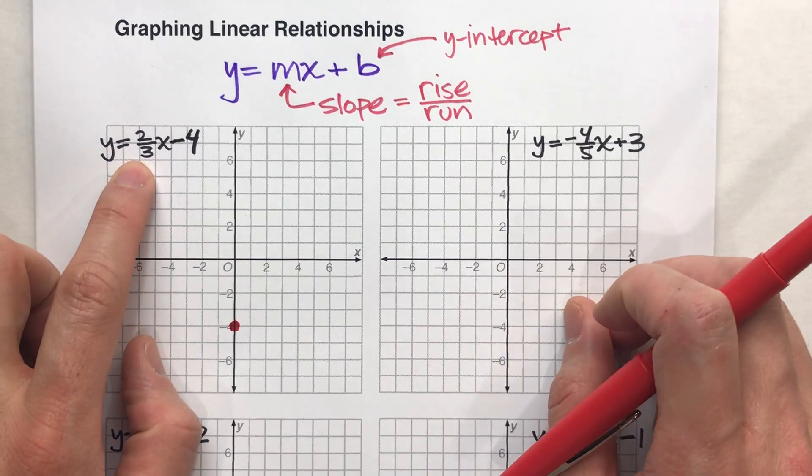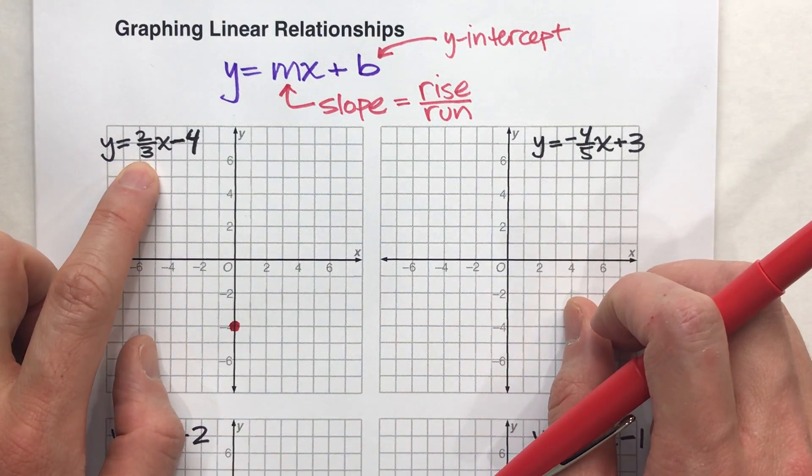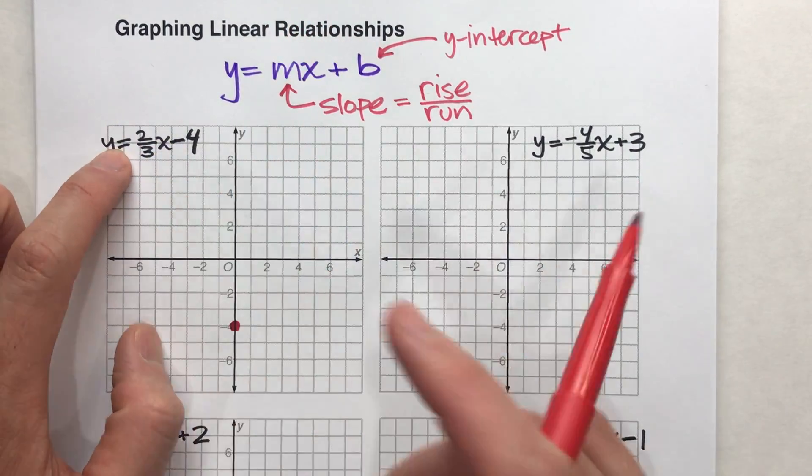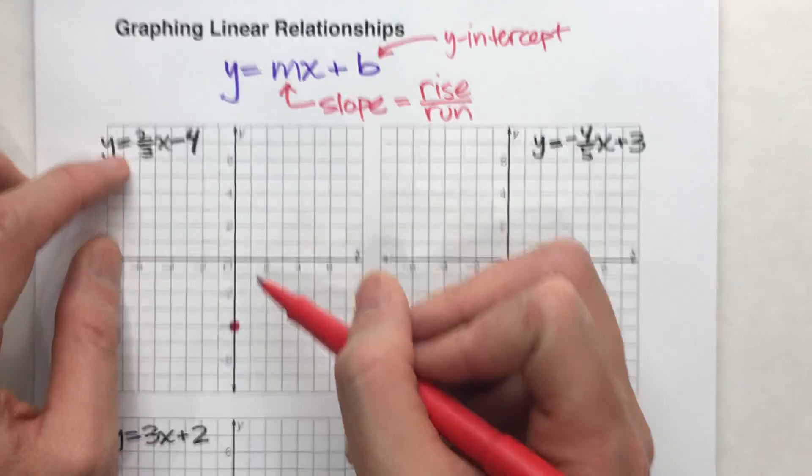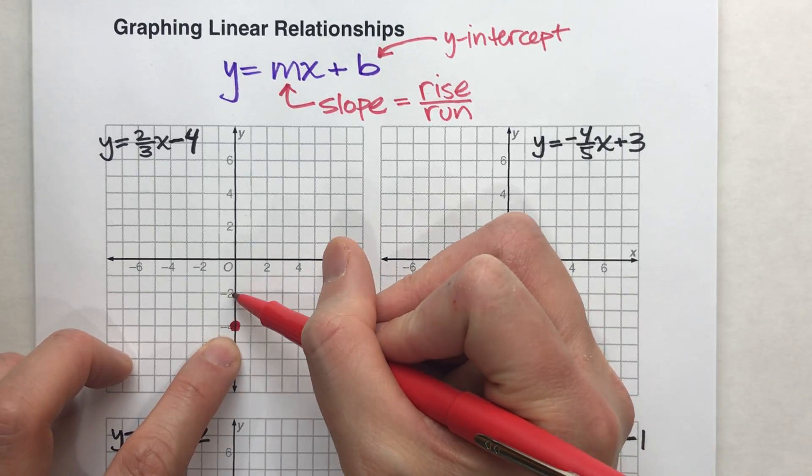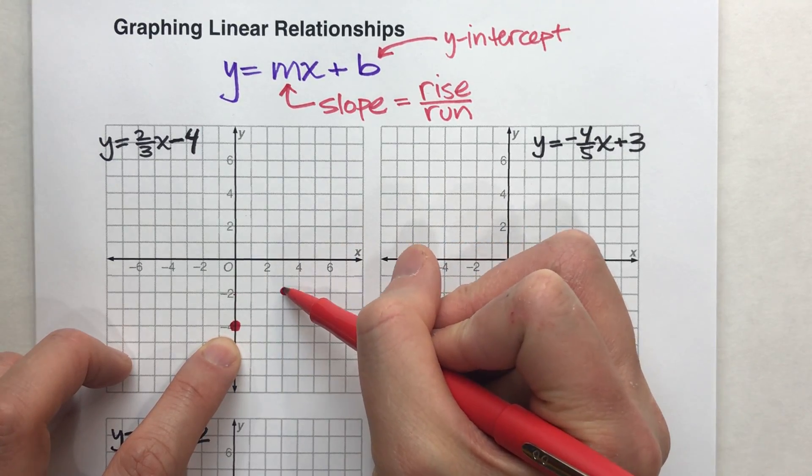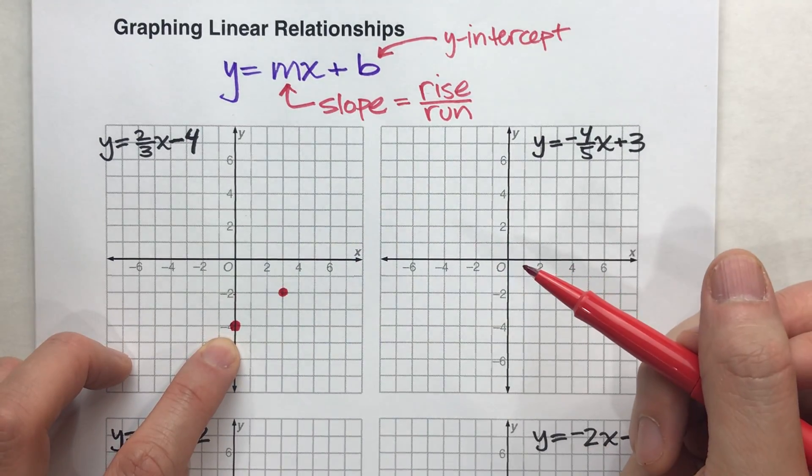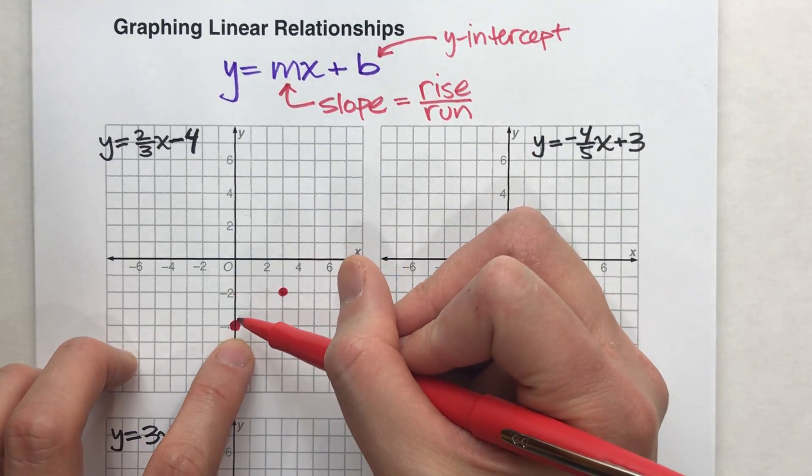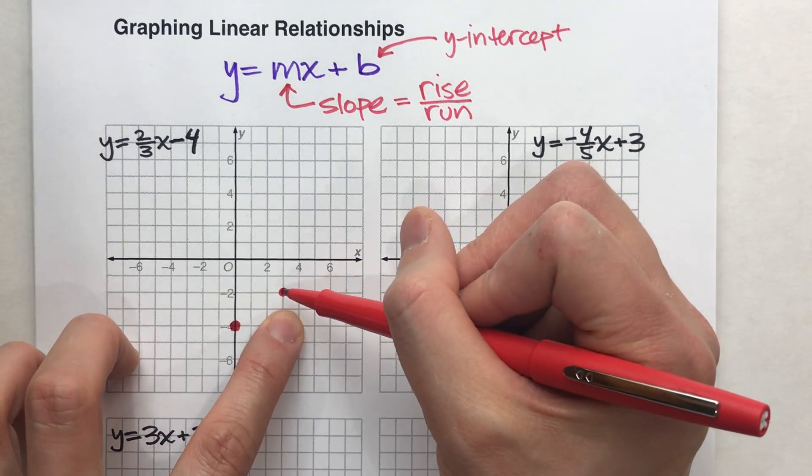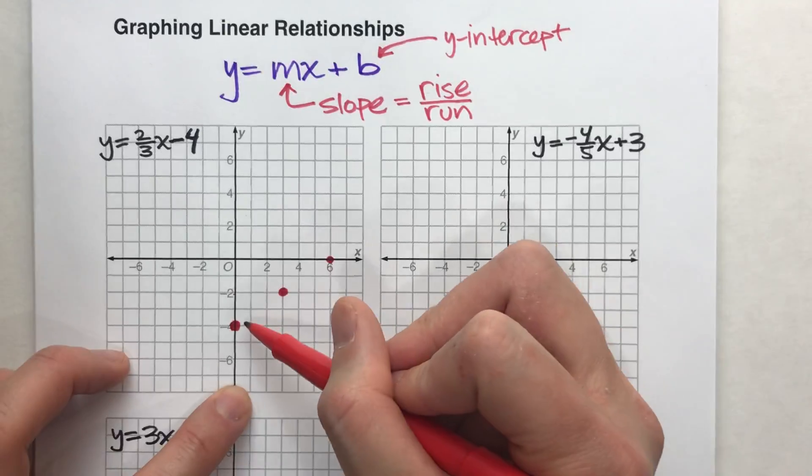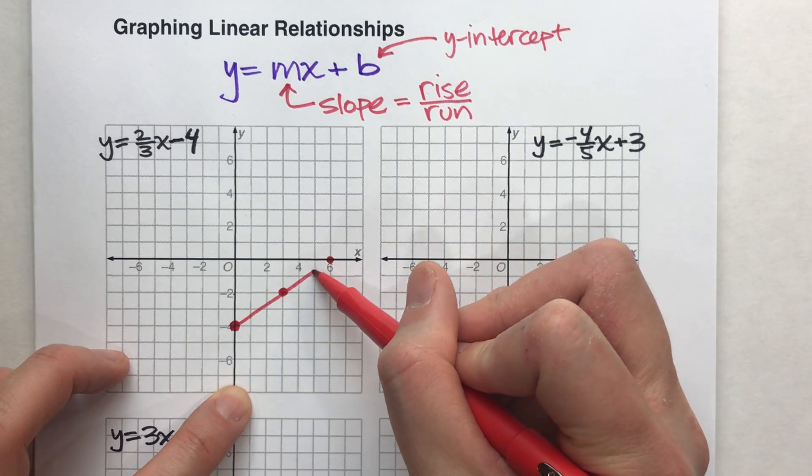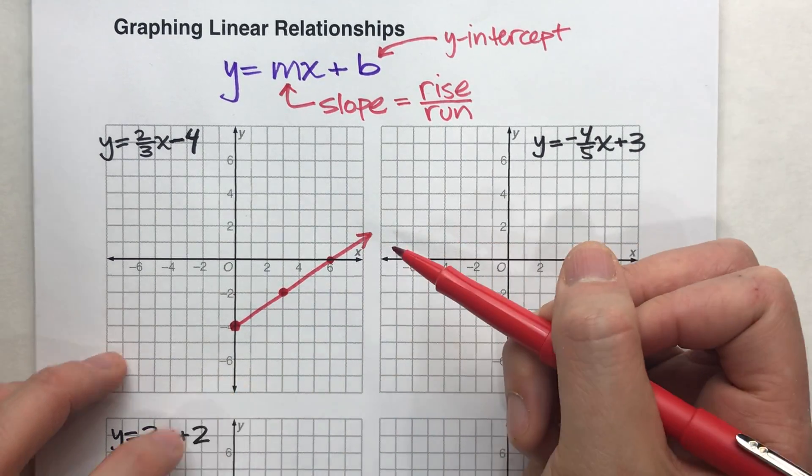Now, I'm going to use this slope, two-thirds, to graph the rest of the line because my rise and my run tell me what the line looks like. My rise is two and my run is three. So from here, I can go up two and right three, and that's another point on my line. And then I can just repeat this over and over again. Up two, right three. Up two, right three. Up two, right three. I could continue that forever because my line will actually go on that way forever.